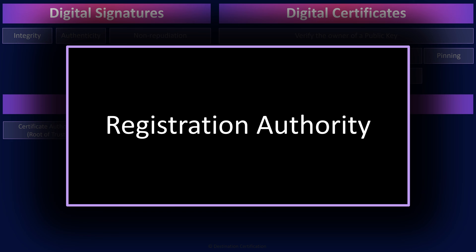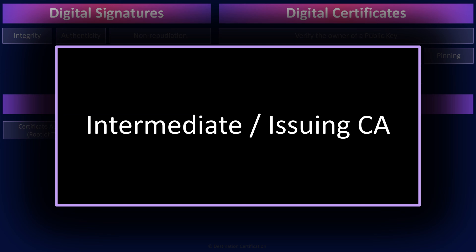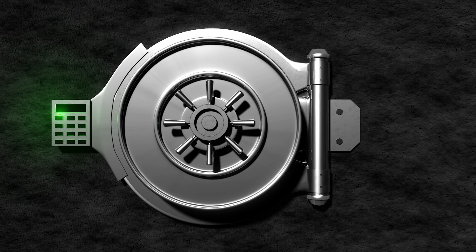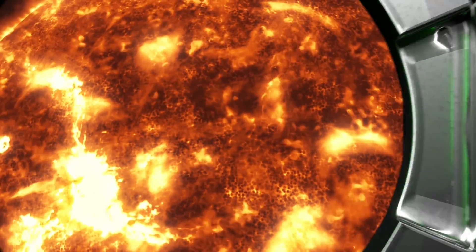Before a CA will create a digital certificate for you, they first need to proof your identity to confirm you are who you say you are. The role within the CA that performs the identity proofing is known as the RA — the registration authority. Now, I mentioned that the certificate authority creates a digital certificate by encrypting data including the name of the owner and their public key with the CA's private key. This is actually an oversimplification, and in fact a bad idea — if the CA was encrypting new certificates using its private key, that private key would have to be on a system that is online, connected to the wildly untrustworthy internet.